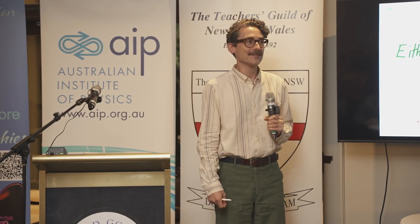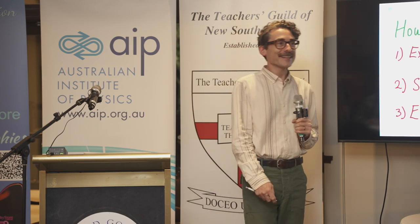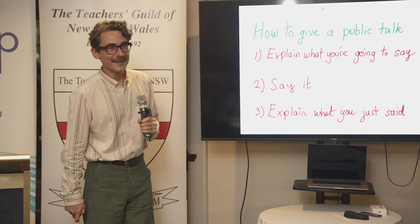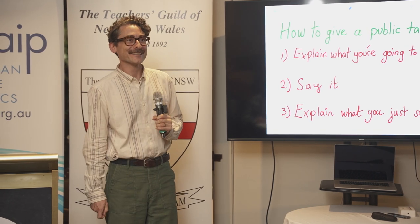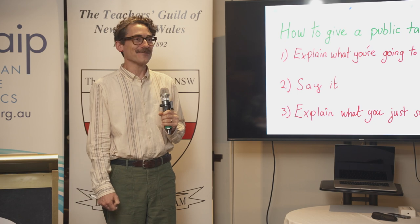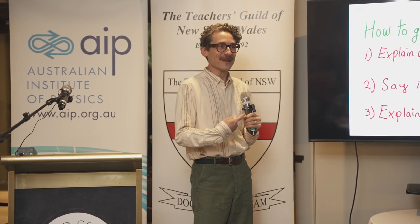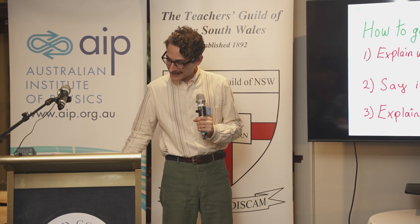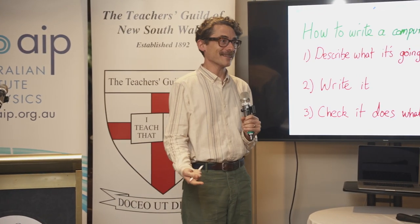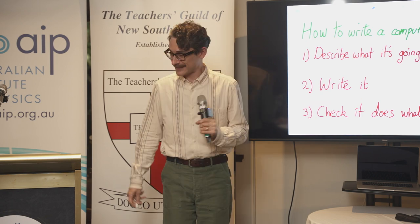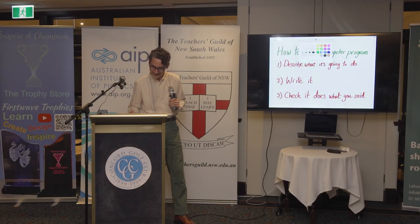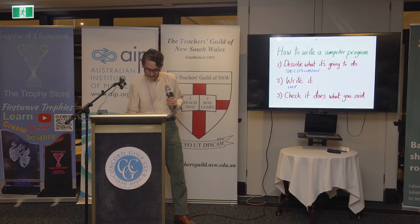To motivate this, I'm going to show you some advice I found when furiously searching on the internet how to give a public talk. It said I should explain what I'm going to say, then say it, then explain what I just said. I think this is bad advice because it's basically telling me to treat my audience like they don't know what they're doing. But I think it's quite good advice for writing a computer program. You should first describe what it's going to do — that's called specification. Then you write it — that's called implementation. Then you check that it does what it said — that's called verification.